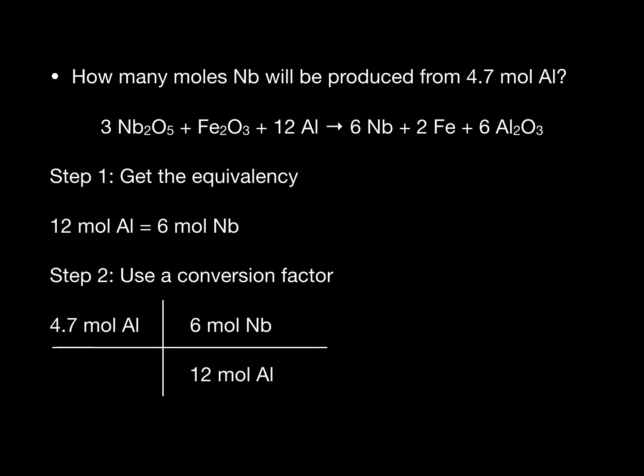This will correctly allow us to cancel the units. Here I'm just showing how that can occur. The moles of aluminum cancels out and that gives us moles of niobium as units in the final answer.